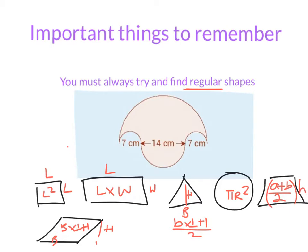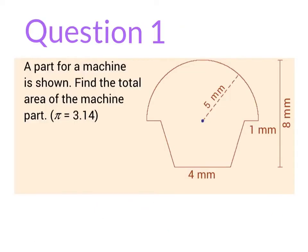It is a plus b all over 2 back there, and we can see we have it here, a plus b all over 2 times h. This is in your log tables. Question 1 says a part of a machine is shown, find the total area of the machine. Immediately we're looking at this and taking in some information. What do I know? I know from here out is 5mm, this area here looks to be 1mm, this is 4mm, and from top to bottom here is 8mm. It's good that they're all in millimeters, which means we don't have to change any units. We have to try and spot what are our regular shapes here.